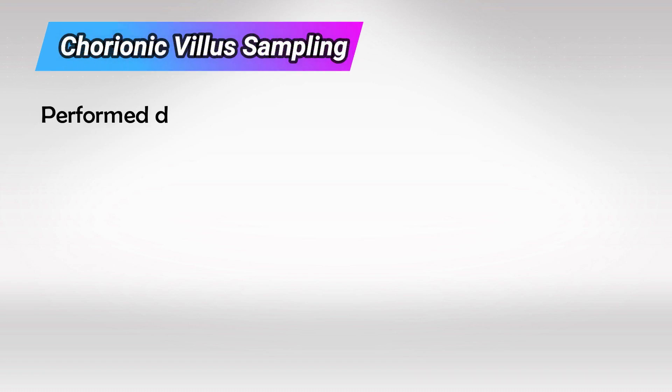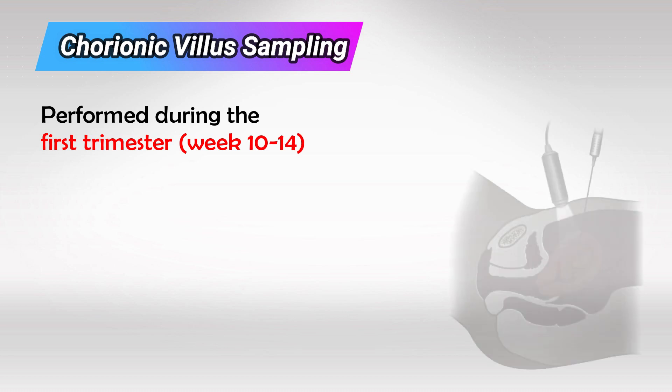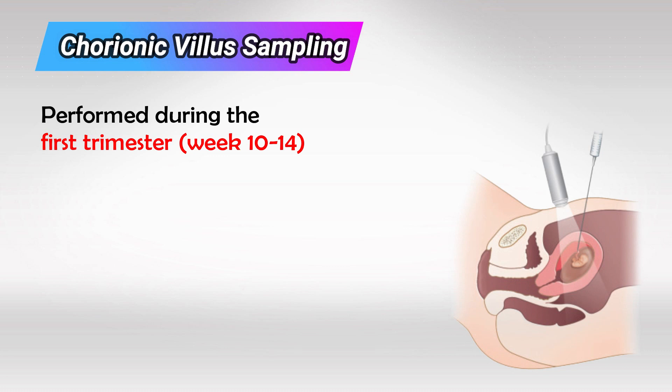The first invasive test is chorionic villus sampling. This is typically done in the first trimester, around week 10 all the way to week 14. During this test, we take a sample of the placenta, which has many cells of the fetus, and then we analyze the karyotype of the fetal cells to see if they have the characteristics of Down syndrome. This is highly accurate and definitive.